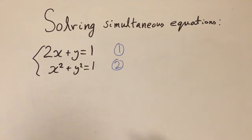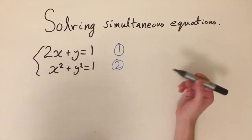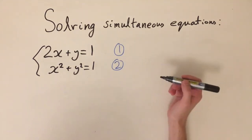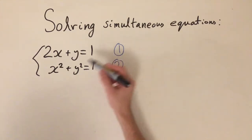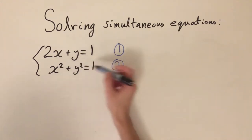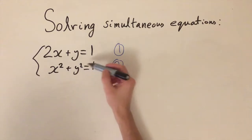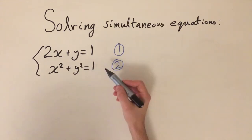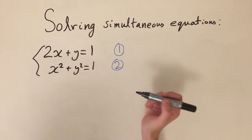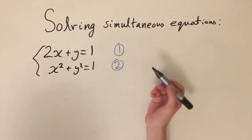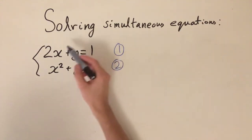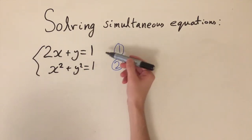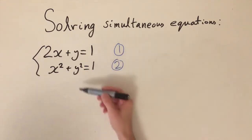If you think back to the ways we can solve simultaneous equations, we can do substitution or elimination. But we can't really use elimination in this case, because we can't scale one equation by a number to get x squared or y squared — that's the nonlinear part. So what we're going to have to do is use substitution: rearrange the first equation to get something in just terms of x or y, then substitute it into the second equation.